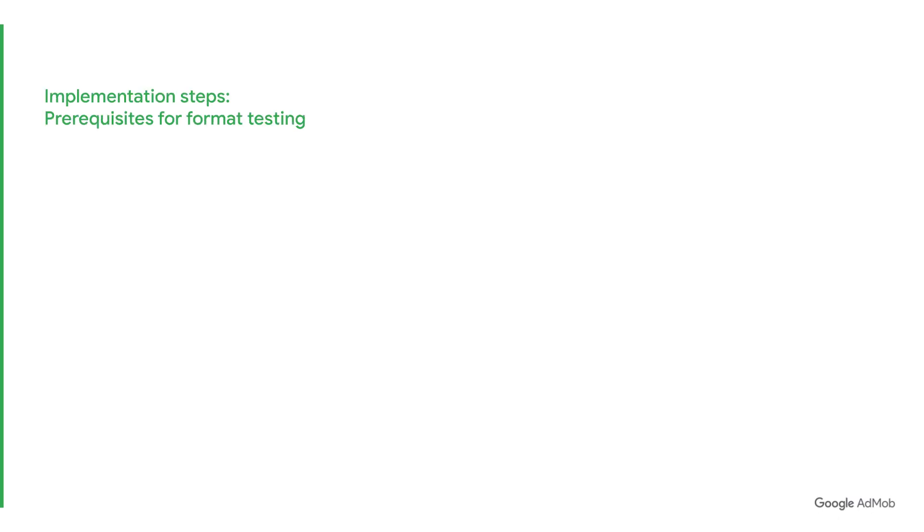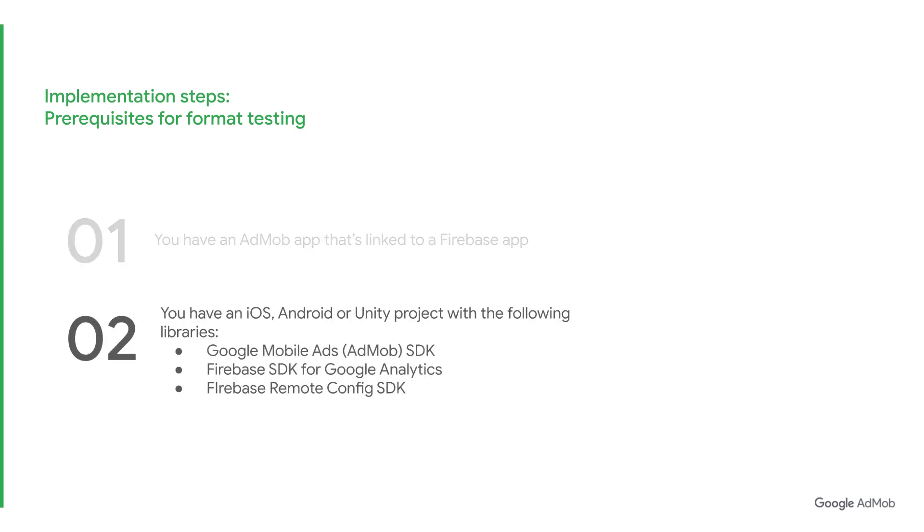There are some prerequisites to fulfill before diving into the implementation. Make sure that, one, you have an AdMob app that's linked to a Firebase app. Two, you have an iOS, Android, or Unity project with the following libraries: Google Mobile Ads, AdMob SDK, Firebase SDK for Google Analytics, and Firebase Remote Config SDK. The implementation steps will outline how and when to add these libraries. It is recommended that you use the latest version of each library.